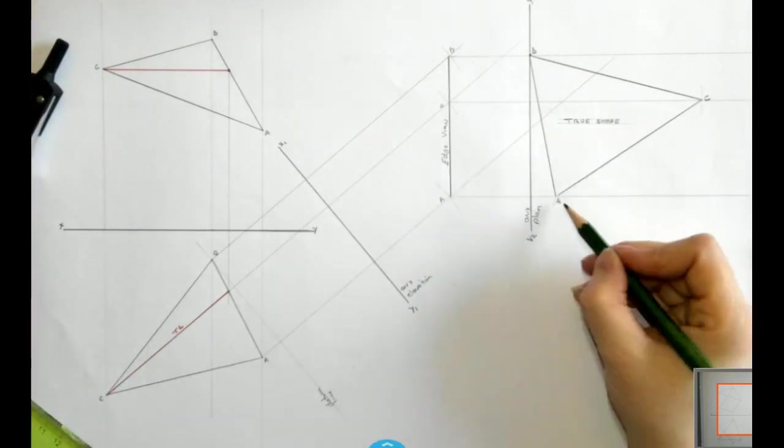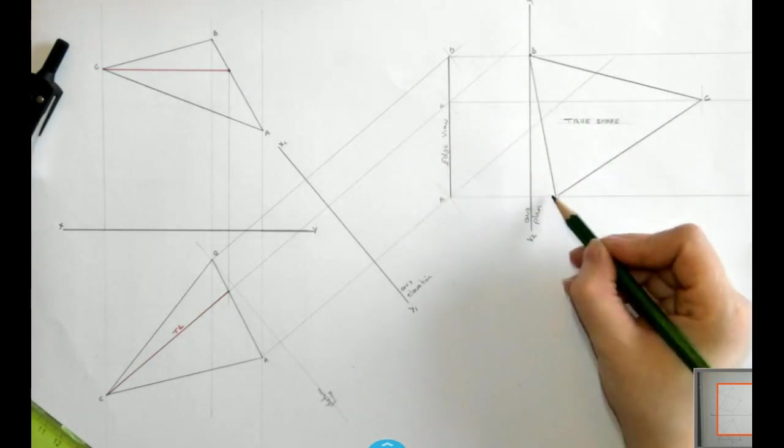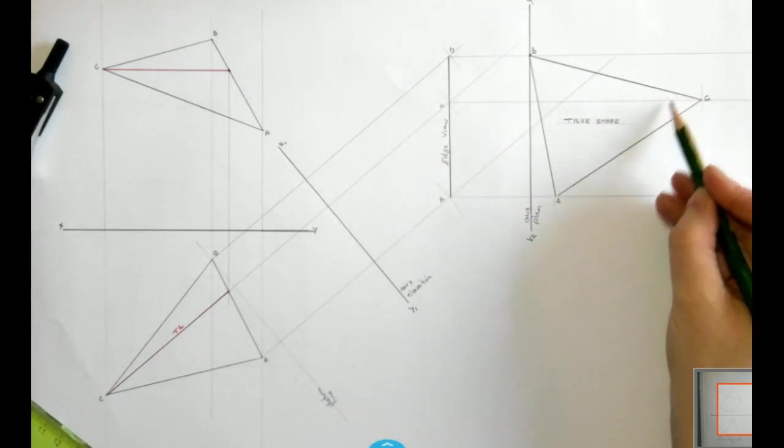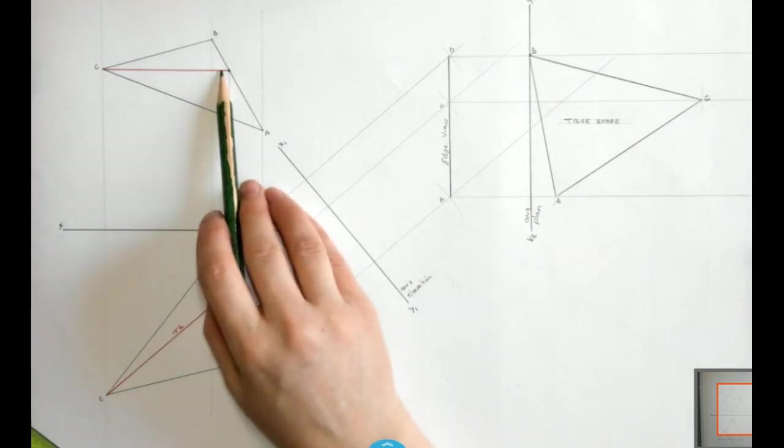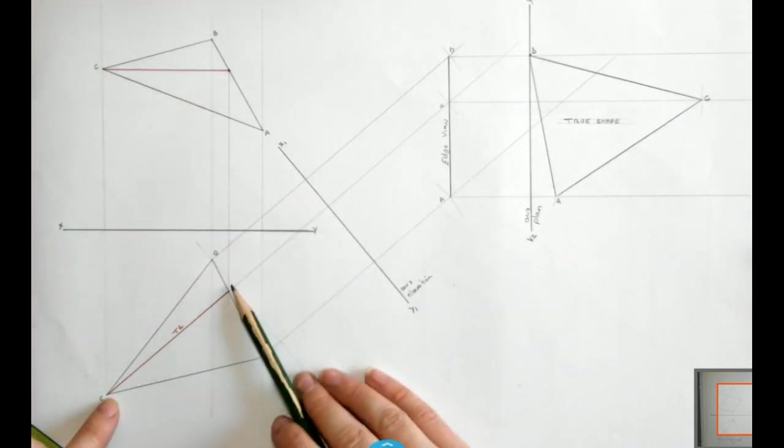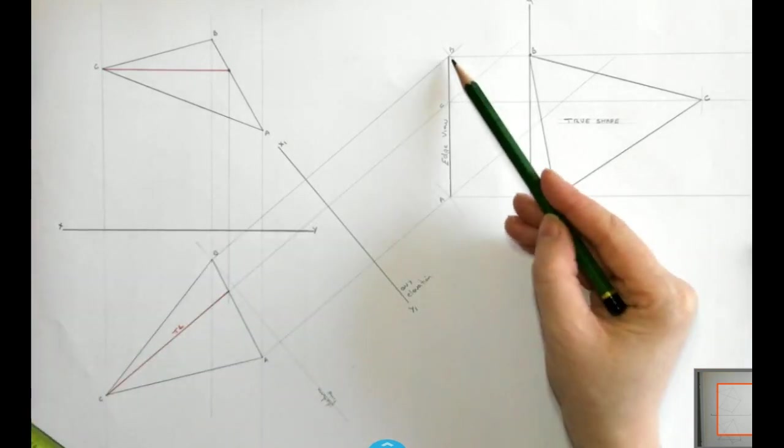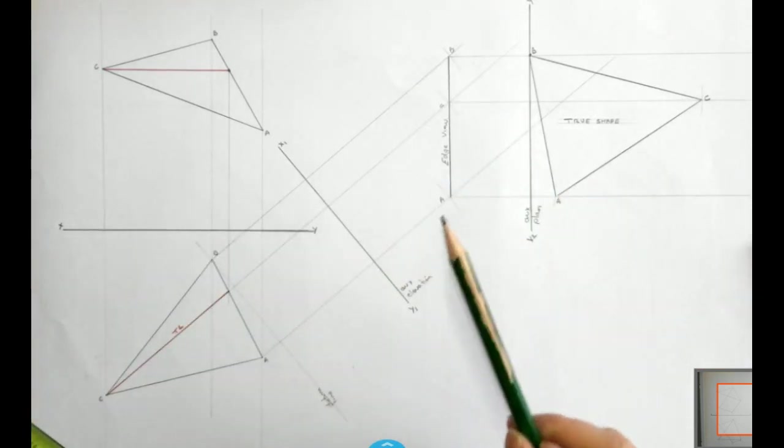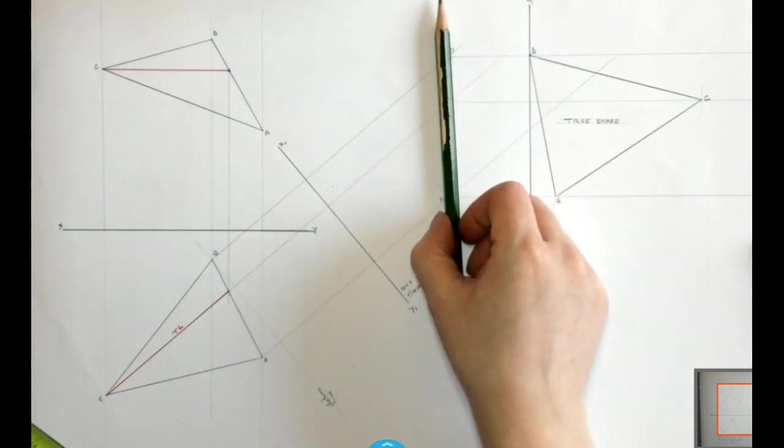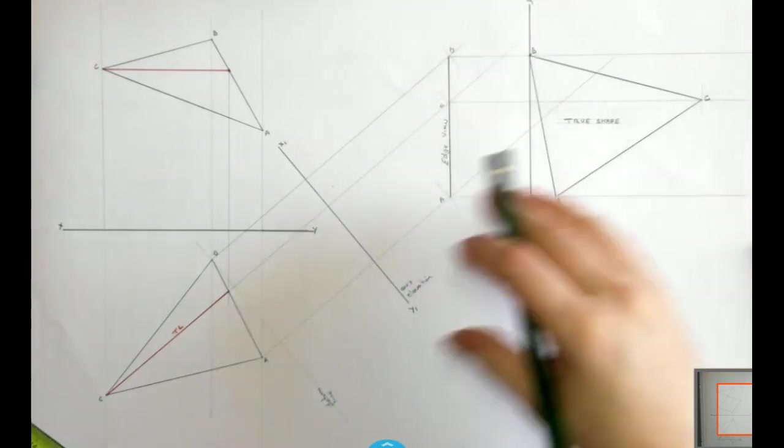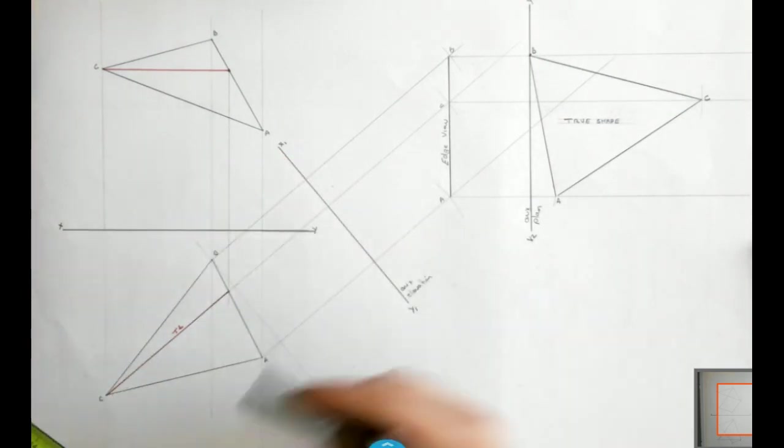By getting this true shape it allows me to measure the length of any one of the three lines and it also allows me to measure any one of the three angles. So to recap, we take a horizontal line which gives us a true length line in my plan. I look into my true length line in order to get an edge view. Once I have my edge view, I then get an X2, Y2 line which is parallel to that. Taking all my distances from my X1, Y1 line back, and this allows me to get a true shape of my object.